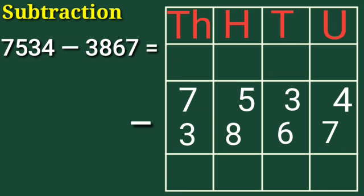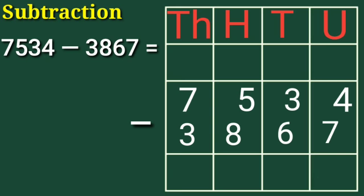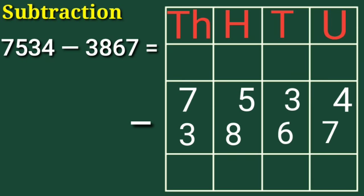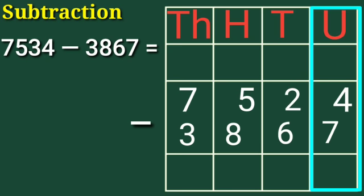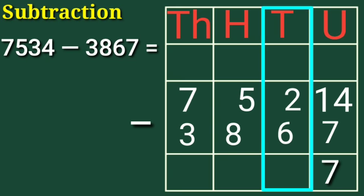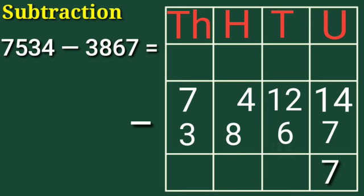Now children, subtract this number. Observe the units column: 4 is smaller than 7. So regroup — 3 tens and 4 units becomes 2 tens and 14 units. Now subtract: 14 minus 7 is equal to 7. Write 7 in the units column. Now observe the tens column: 2 is smaller than 6. So regroup — 5 hundreds to tens gives 4 hundreds and 12 tens. Now subtract tens: 12 minus 6 is equal to 6. Write 6 in the tens column.